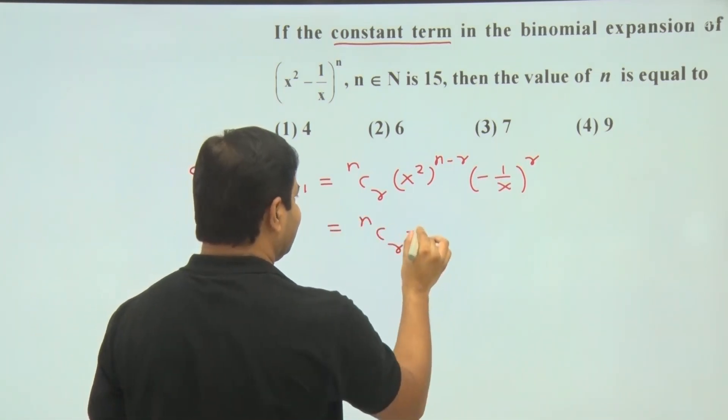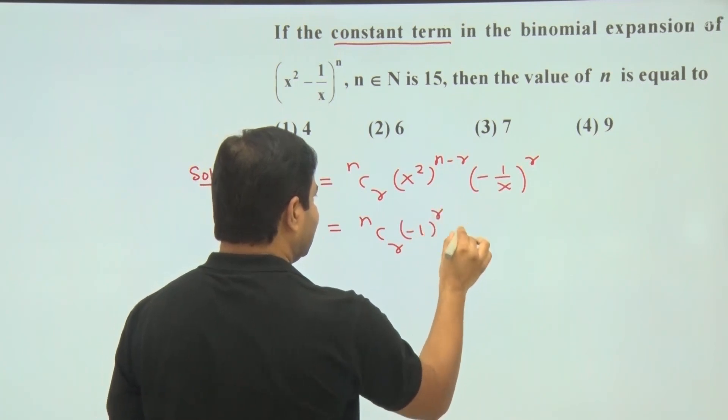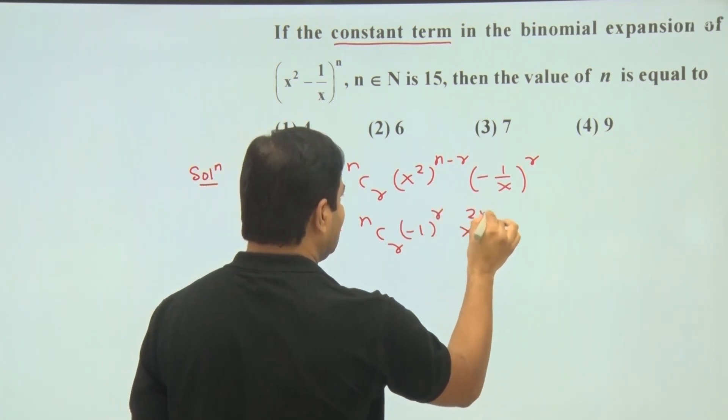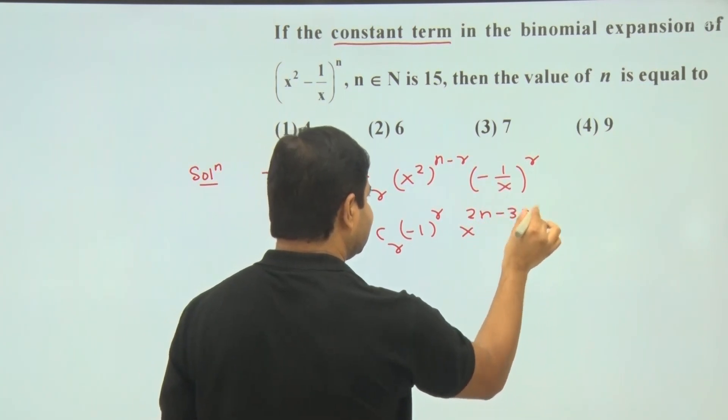Now collect all the powers of x. So nCr, minus 1 power r, and x to the power, this will be 2n minus 2r and minus r, so 2n minus 3r.